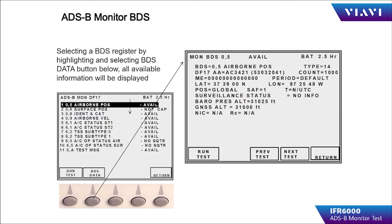Selecting any of the registers that are available will display the data collected from the aircraft. To select a register, use the up or down arrow to highlight the register of interest. Press the BDS soft key and the data will be displayed for that register.